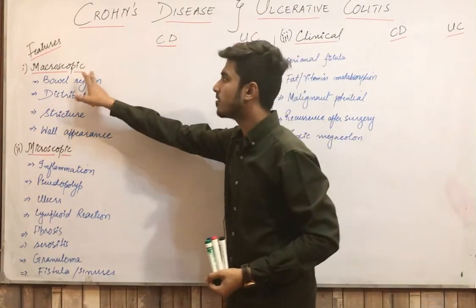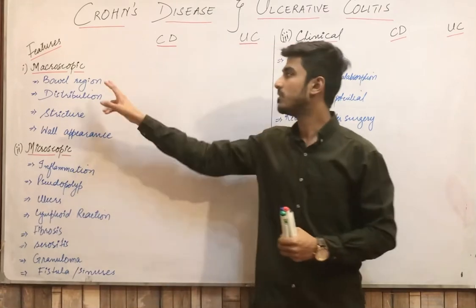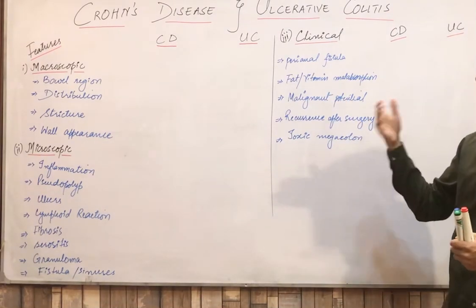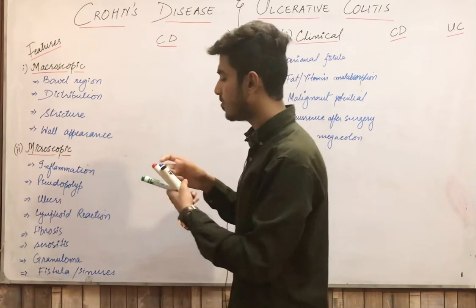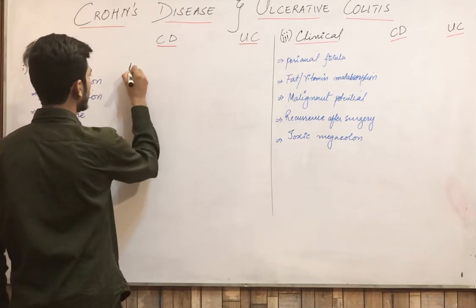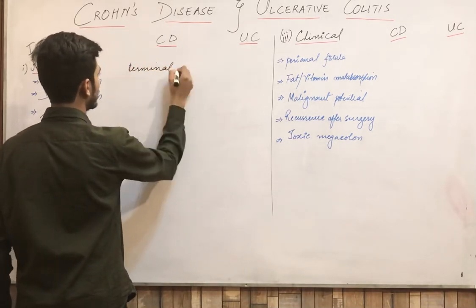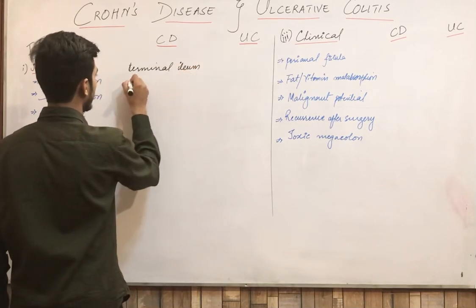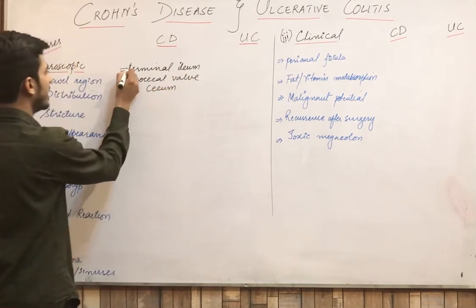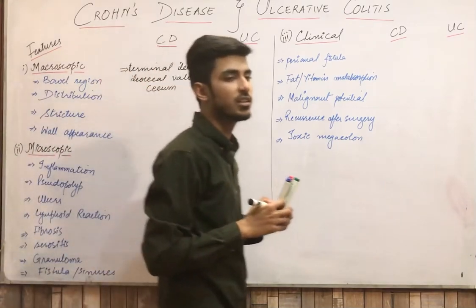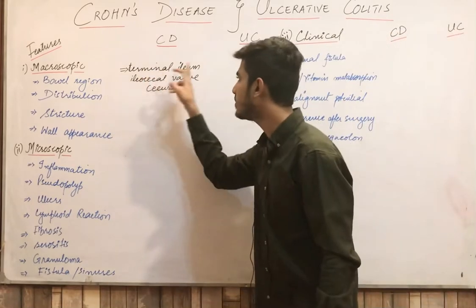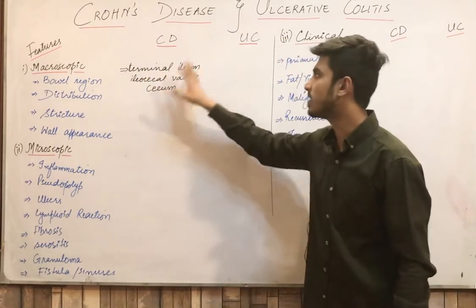The first macroscopic feature is the bowel region — in which region of the bowel each disease commonly occurs. Crohn's disease basically occurs in the terminal ileum, ileocecal valve, and cecum. These are the three most common sites. Crohn's disease can occur in any part of the GI tract, but these three are the most common sites.